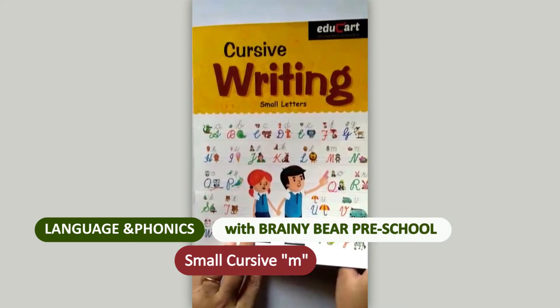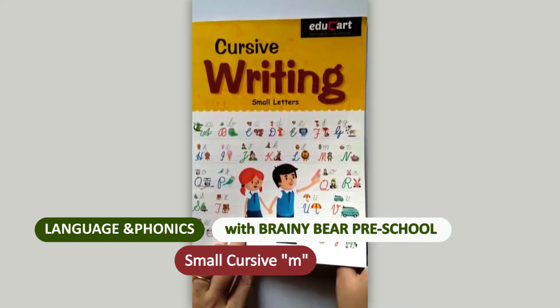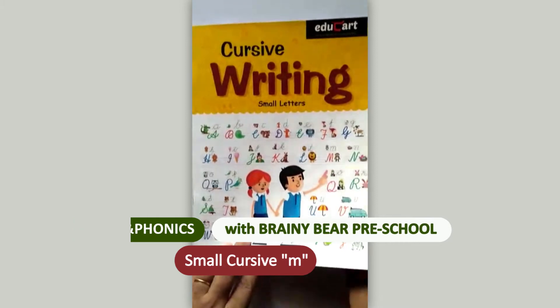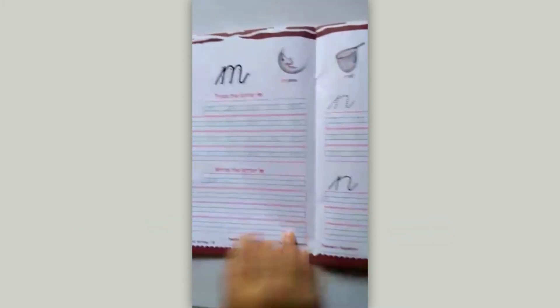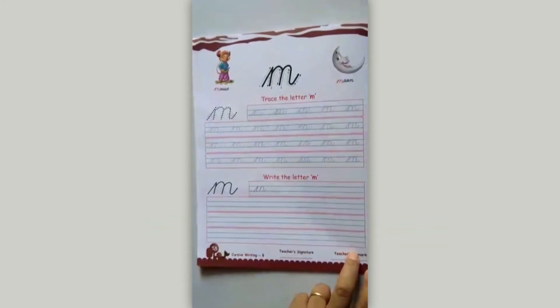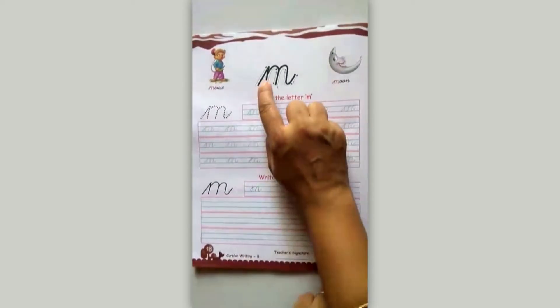We'll see writing a small cursive M. So take your cursive writing notebook and open page number 18. First trace it with your finger. Start from number 1.